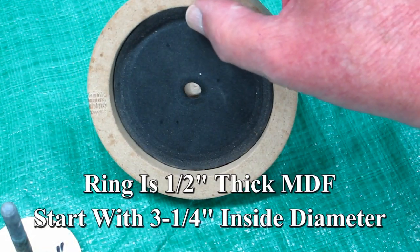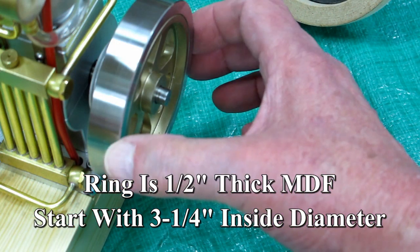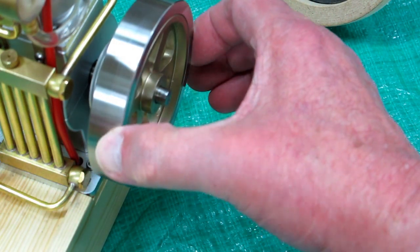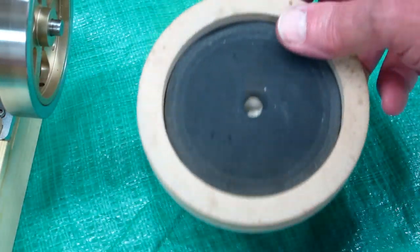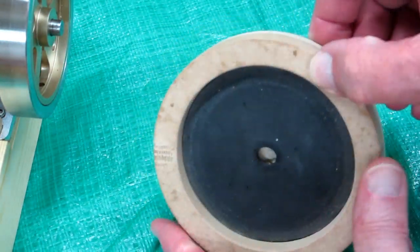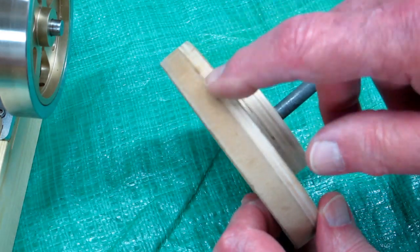This is a piece of MDF. You want a hole in here that's a little bit smaller than the outside of this flywheel. Very accurately glue that centered on this disc.